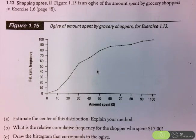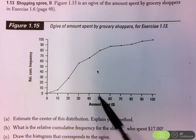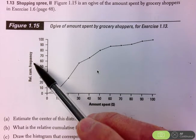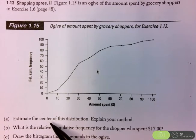So what this represents is an ogive where we are comparing the amount of money spent by shoppers to the relative cumulative frequency. So, part A. Estimate the center of the distribution and explain your method.